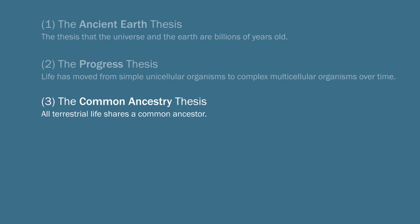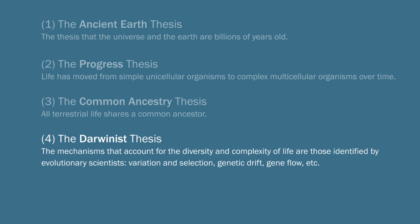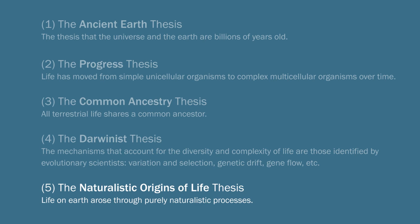What Plantinga calls the Darwinist thesis, according to which the mechanisms that account for the diversity and complexity of life are those identified by evolutionary scientists: variation and selection, genetic drift, and so on. And fifth, the naturalistic origins of life thesis, the idea that life on earth arose through purely naturalistic processes as opposed to a divine action or divine miracle.